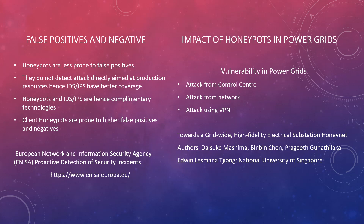Client honeypots are more prone to higher false positives because they deal with production traffic — they are more aggressive and detect malicious servers by interacting with them. Server honeypots deal with non-production traffic, making them less prone to false positives and negatives. They are not aggressive; they just detect attacks and understand what the attacker is trying to do inside the server honeypot.